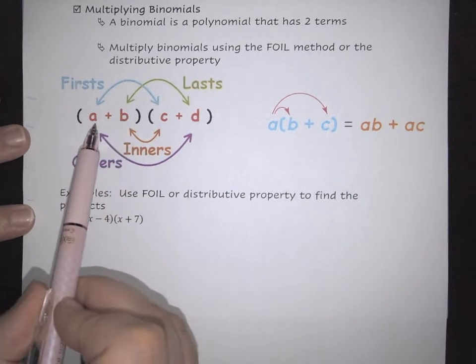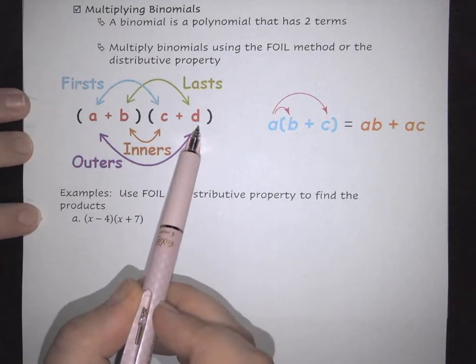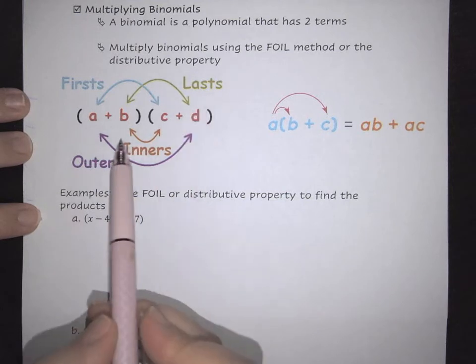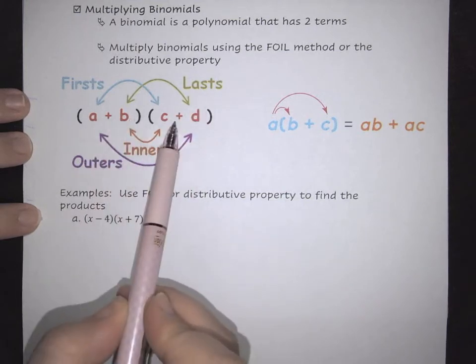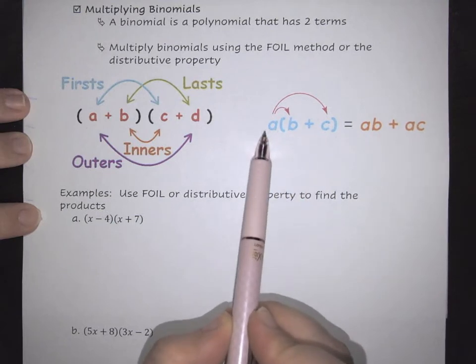When you multiply them together, it means you're going to multiply both of them together. We have two ways that we can do that. The first way is if you have two individual binomials. The second is if you have one binomial and you're multiplying it by a constant.